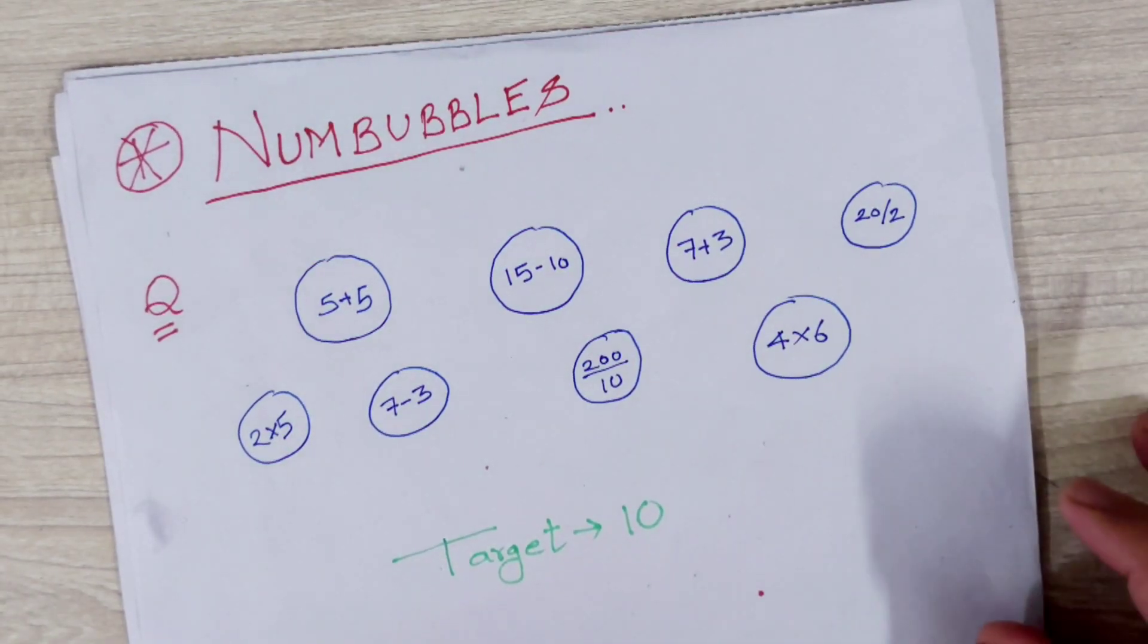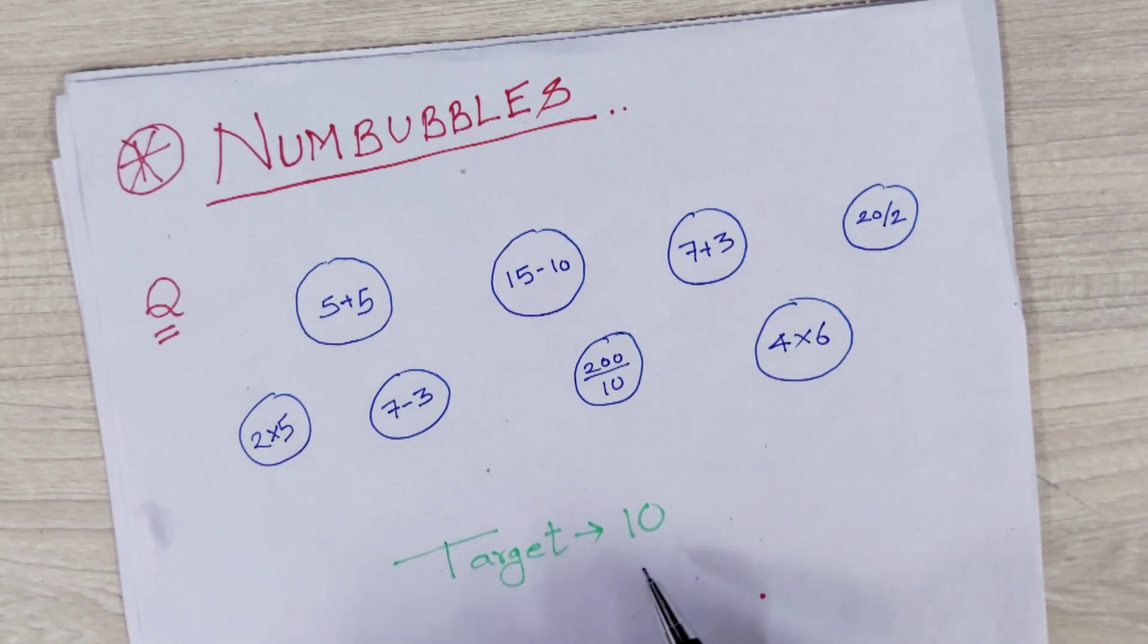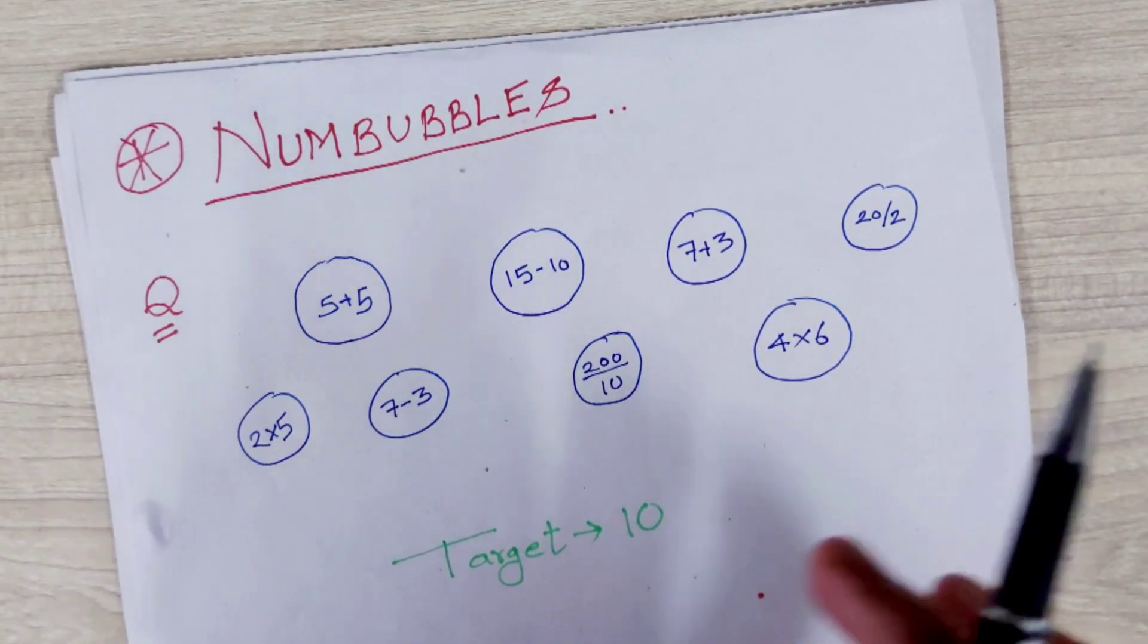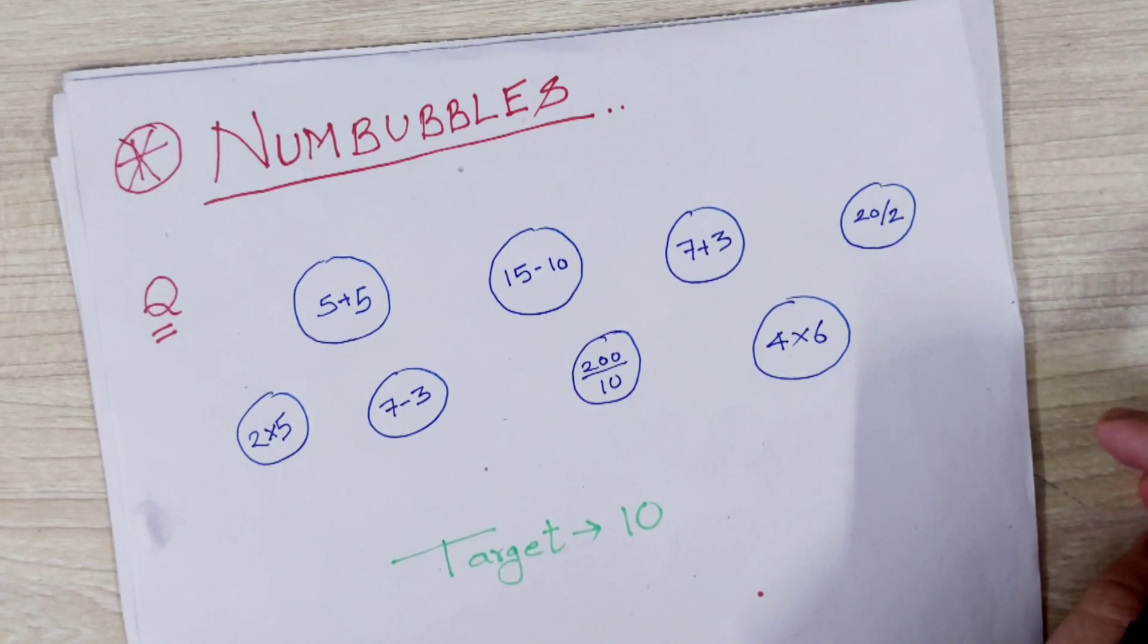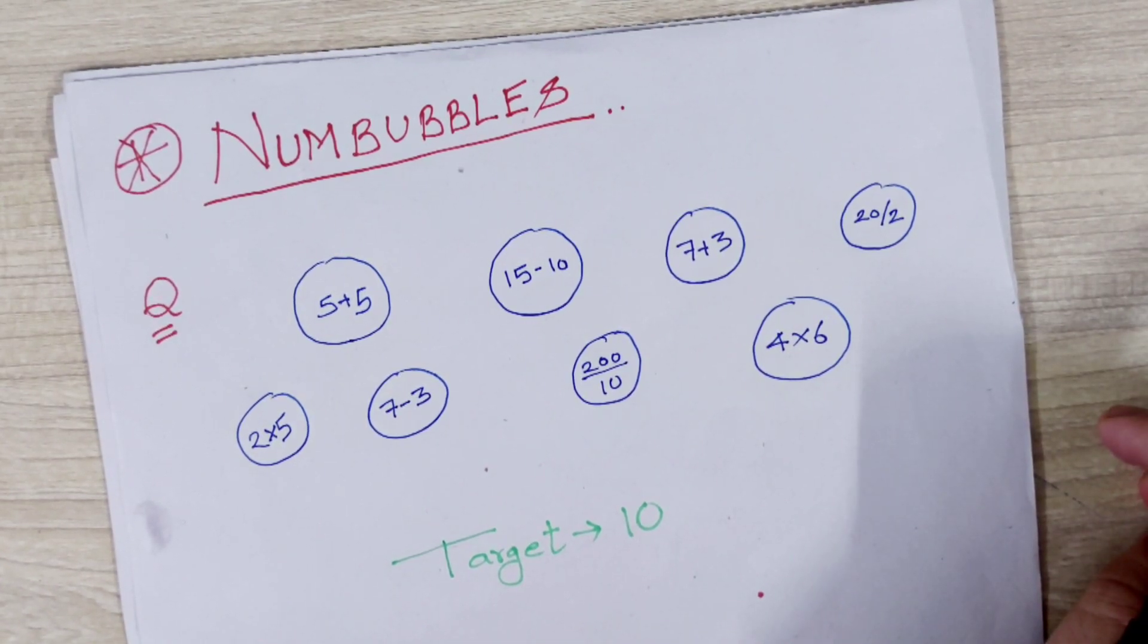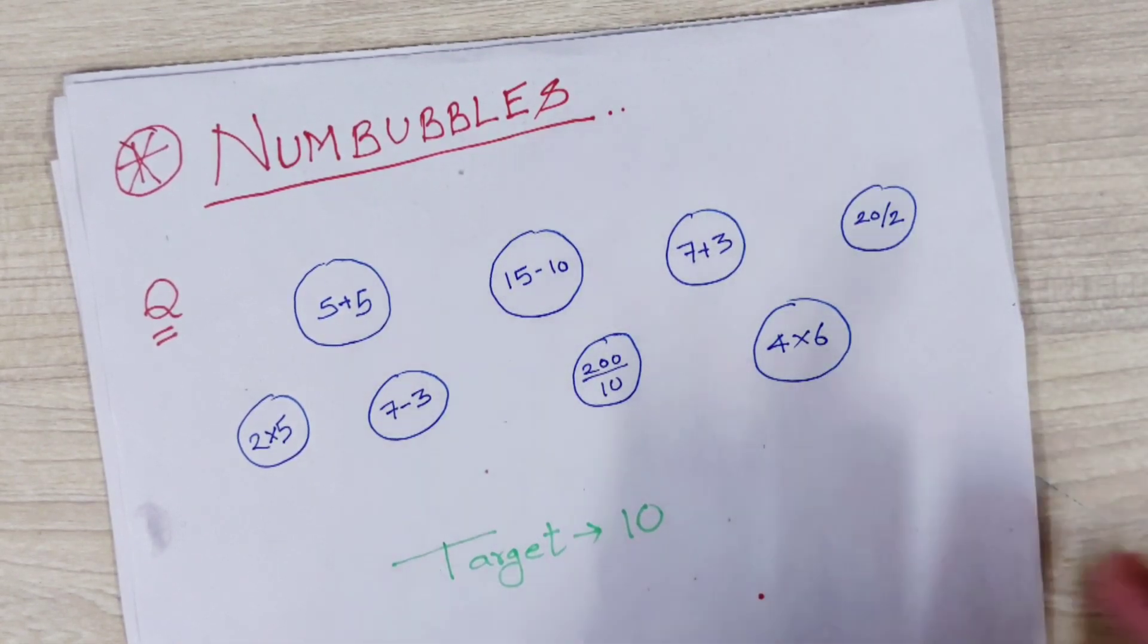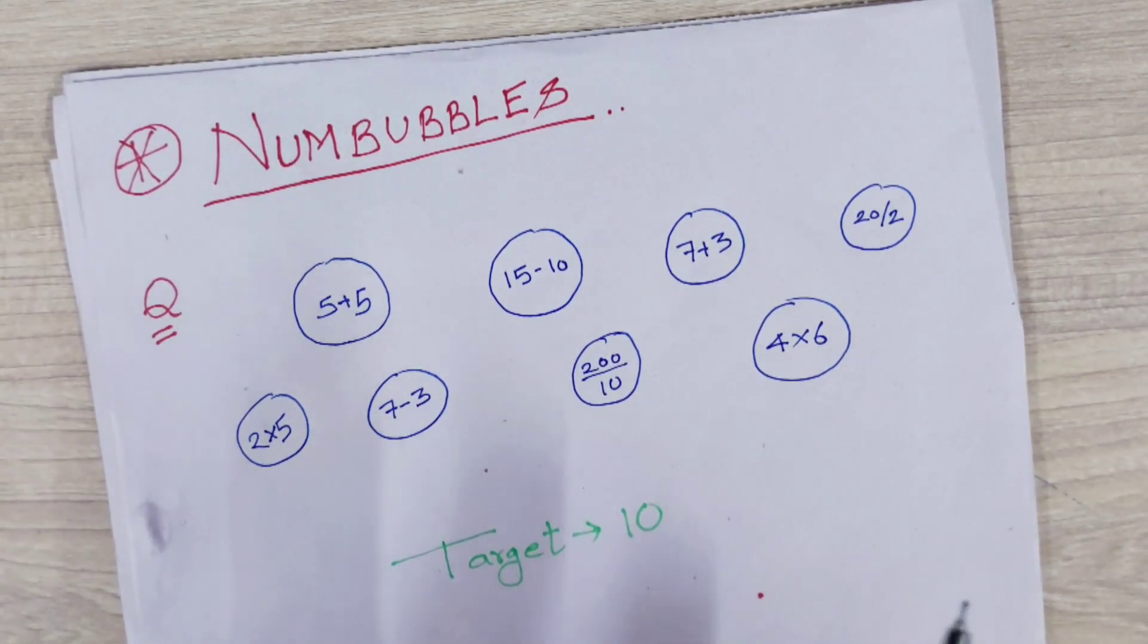So guys, let's do Nummables now, in which we will be given a target like in this case 10 is given, and we have to burst balloons. A few balloons will be there, and we have to burst them with operations, not with the individual numeric value, with some operation like addition, subtraction, division, and multiplication. What we have to do here is just tap on that balloon so it will get burst with the correct answer.